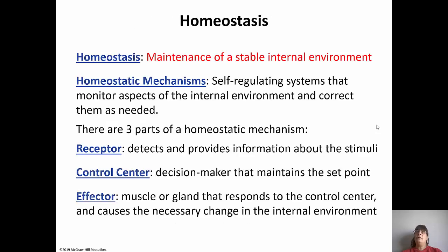Homeostasis is basically the maintenance of a happy, stable, steady internal environment. We have mechanisms to self-regulate and monitor our internal environments and correct them as needed. There are three parts of a homeostatic mechanism: the receptor detects abnormalities and sends information about stimuli to the control center; the control center is the decision maker that maintains a set point, keeping conditions within a normal range; and the effector is the muscle or gland that responds to the control center and brings about the needed change.